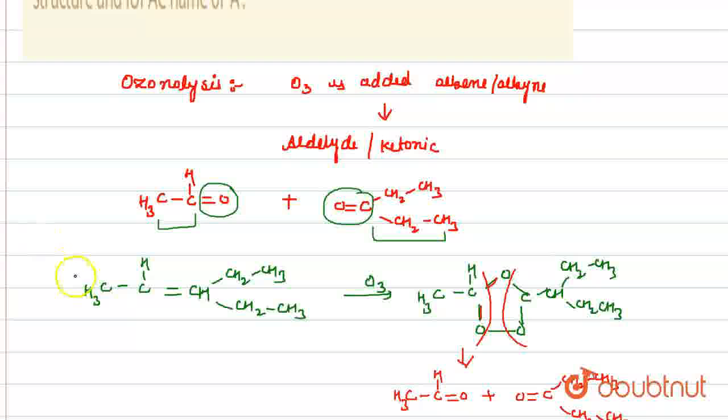So, our major compound will be this and the name of this compound will be 3-ethyl-pent-2-ene. So, this will be compound A and the IUPAC name of this compound will be 3-ethyl-pent-2-ene.